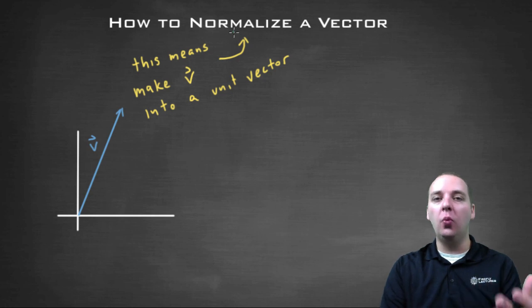This process is called normalizing a vector. So that's what that means if you hear that word, or somebody asks you to normalize a vector, that's what they're asking you to do. So graphically it looks something like this,